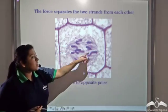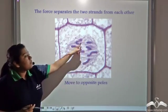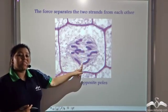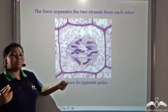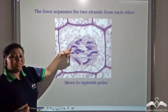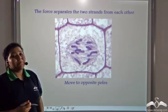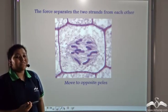The strands which were previously present on the equator now start moving towards the poles because of the force applied by the spindle fibers.